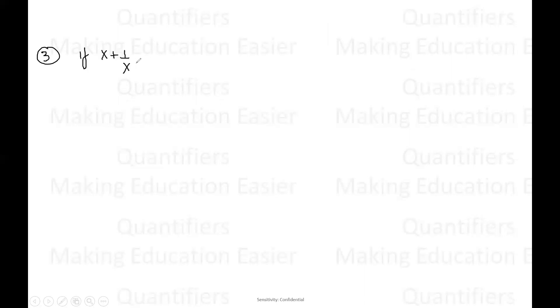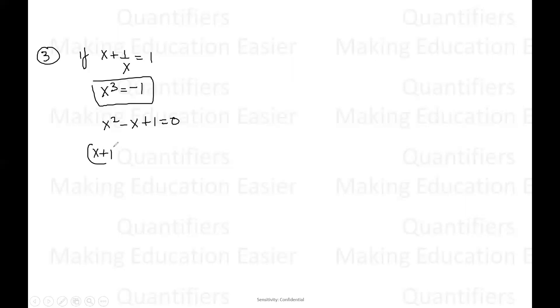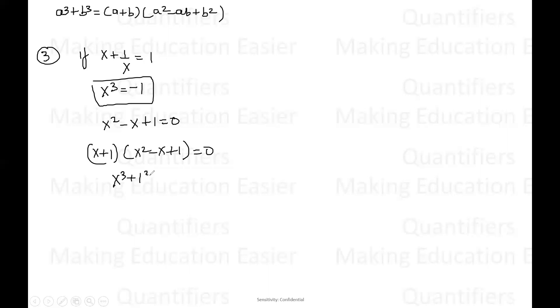The third result says if X plus one by X is equal to one, then X cubed will be equal to negative one — very, very important. I am multiplying the complete equation by X plus one. We'll get X plus one into X squared minus X plus one is equal to zero. I hope all of you remember the formula of A cubed plus B cubed: it is A plus B into A squared minus AB plus B squared. This equation is of that form, so this is basically X cubed plus one cubed equals zero, and here X cubed equals negative one.